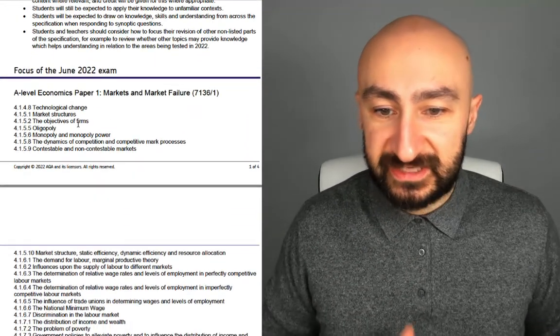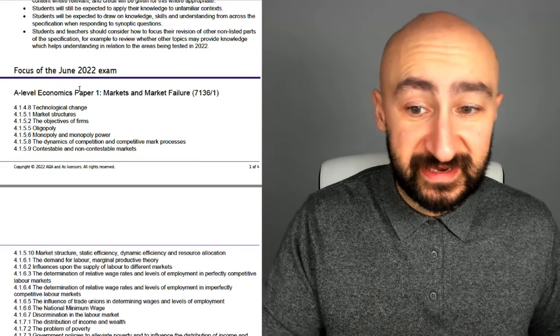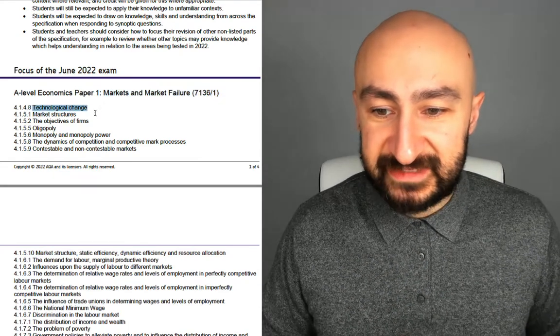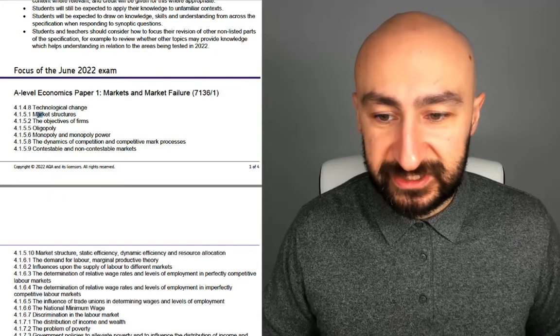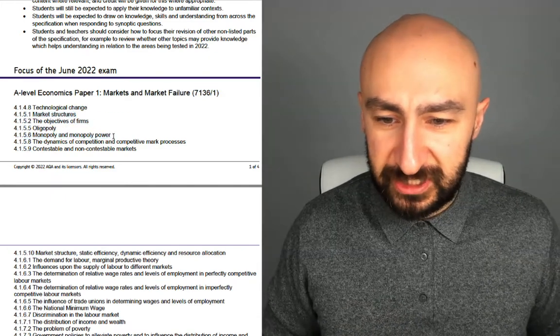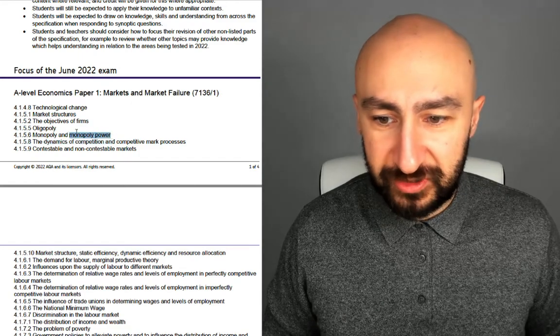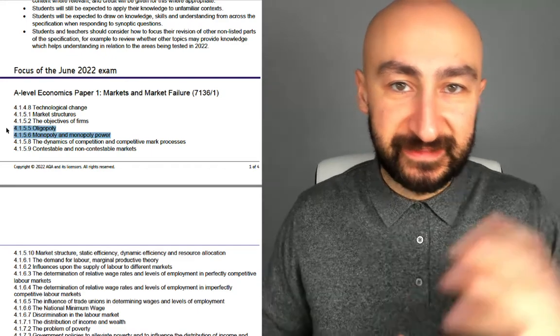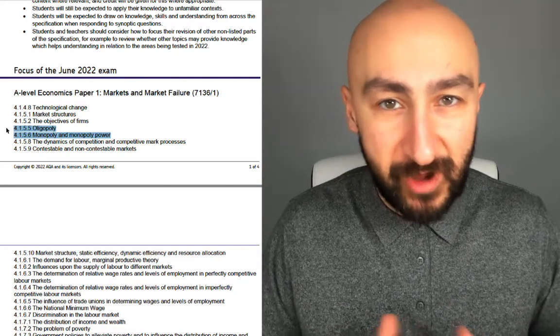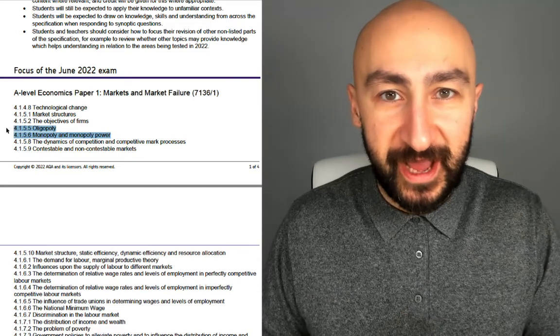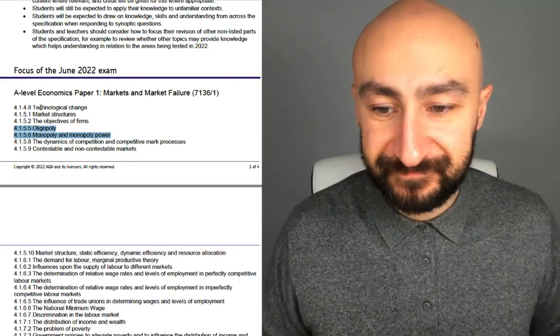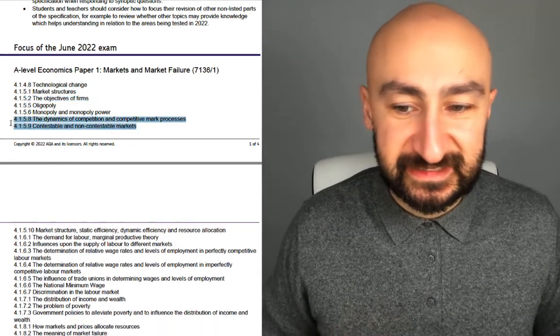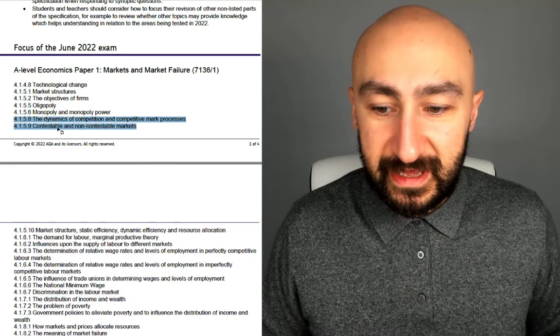So let's run through paper one. Markets and market failure. This is all about microeconomics. Technological change, market structures. If you're talking about market structures, it looks like maybe there's gonna be a big question on oligopolies and monopoly, monopoly power. So making sure you're understanding that natural monopoly, the oligopoly kinked demand curve, collusion, non-price differentiation, and maybe how that fits in with the objectives of these firms and assessing the contestability of those markets as well.